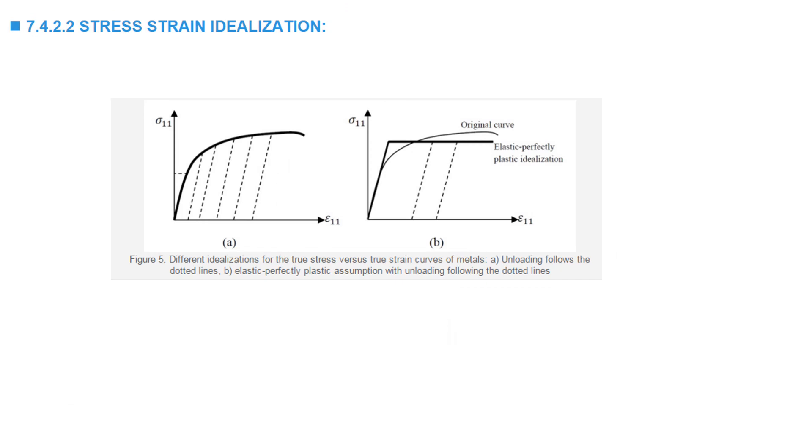For the purpose of the plasticity model, the described stress strain curve is idealized as shown in the two graphs here. In the first graph, the metal behaves elastically until an initial yield point. It then follows the black curve. Upon unloading at any point in the strain-hardening region, the model assumes the material to follow the dotted line for loading and unloading.